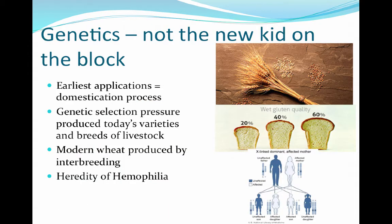Genetics is not a new thing. Some of its earliest applications were during the domestication process. Specifically, the varieties of modern wheat that we have today were produced by interbreeding three different species of wheat. What we ended up with was a wheat seed that had a lot more seed heads and was more stable and didn't scatter in the wind. We slowly got to that point by selecting for traits in wheat plants that were more like what we wanted, and today we have modern wheat breeds.